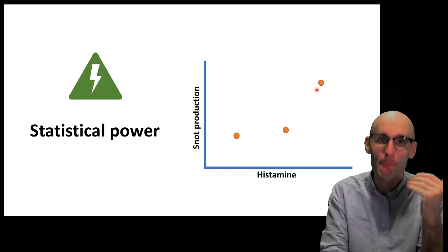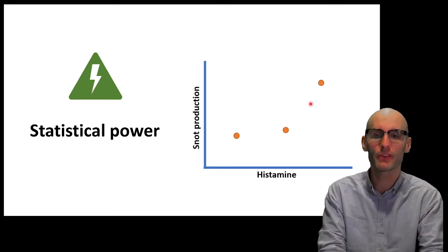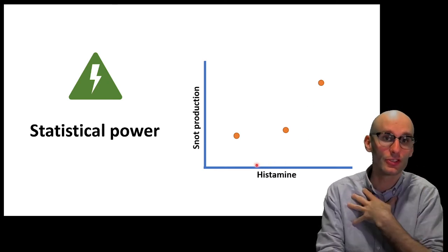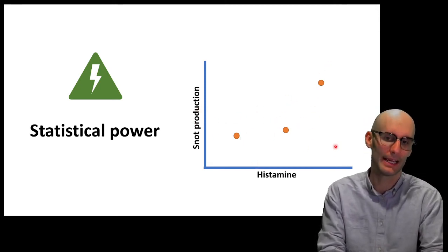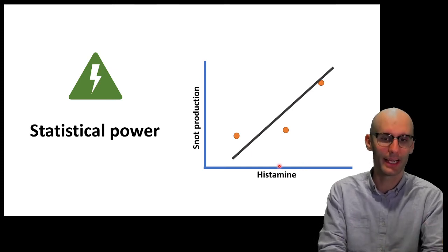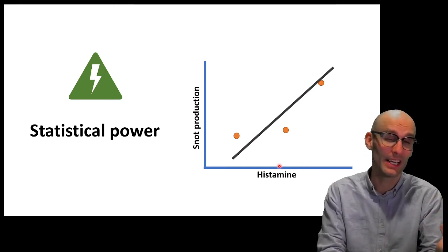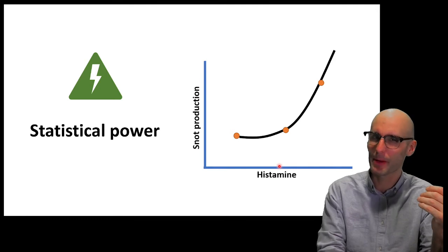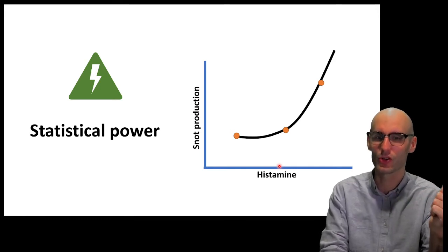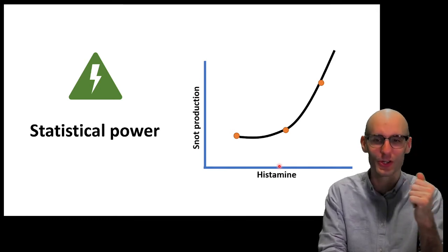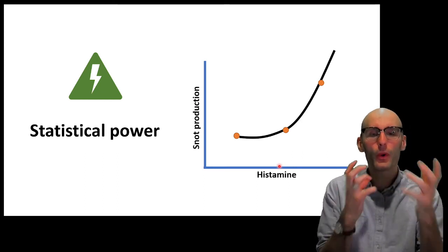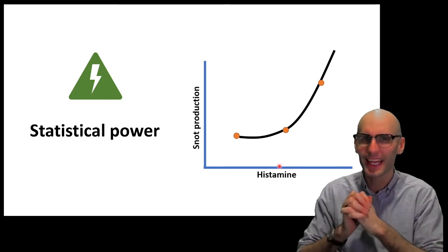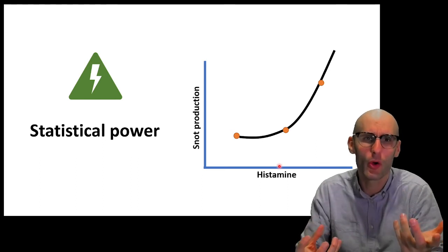But statistical power can do more than just be designated whether your result is good or not. It can actually tell us what model should we apply. So, here we've got histamine concentration in our blood versus snot production. And we've got this, like, shape here. Now, you could run a linear graph through that, and that looks fairly reasonable.